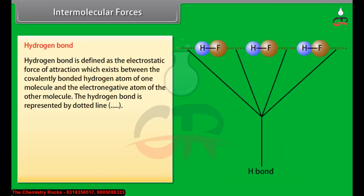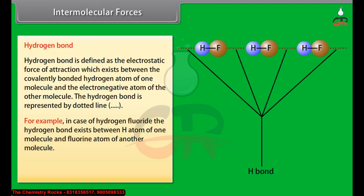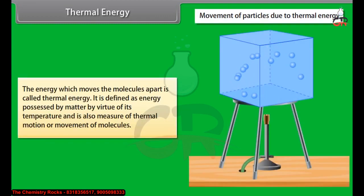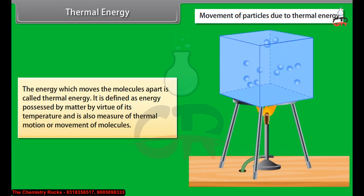Hydrogen bond: A hydrogen bond is defined as the electrostatic force of attraction which exists between the covalently bonded hydrogen atom of one molecule and the electronegative atom of the other molecule. The hydrogen bond is represented by a dotted line. For example, in the case of hydrogen fluoride, the hydrogen bond exists between the H atom of one molecule and the fluorine atom of another molecule. Hydrogen atoms should be bonded to highly electronegative atoms such as fluorine, oxygen, or nitrogen. The larger the electronegativity of the other atom, the greater is the strength of the hydrogen bond. The energy which moves the molecules apart is called thermal energy. It is defined as the energy possessed by matter by virtue of its temperature and is also a measure of thermal motion or movement of molecules.